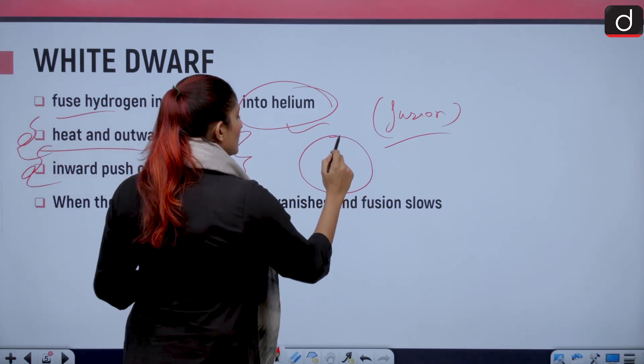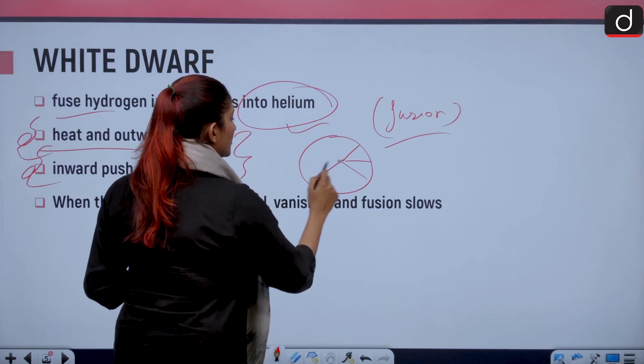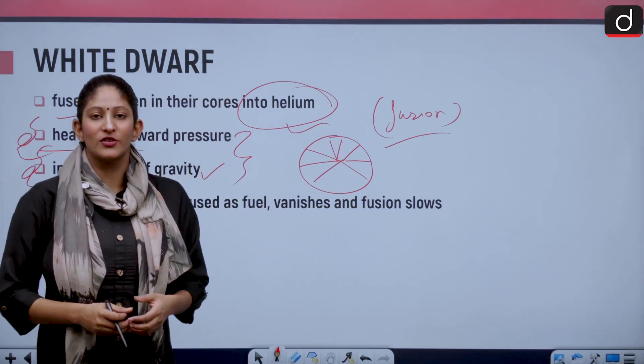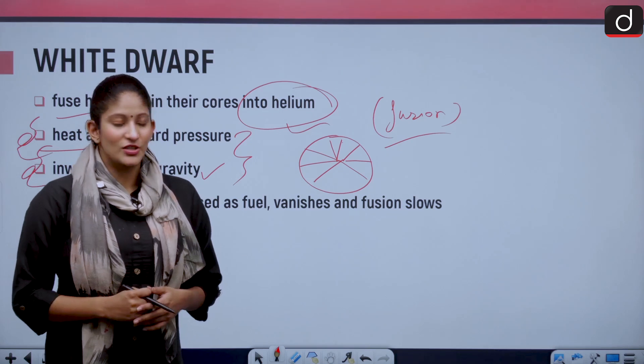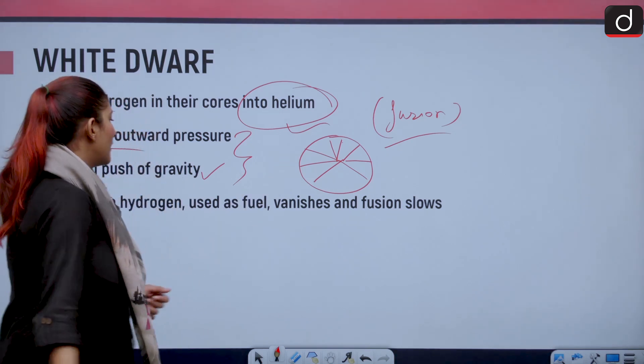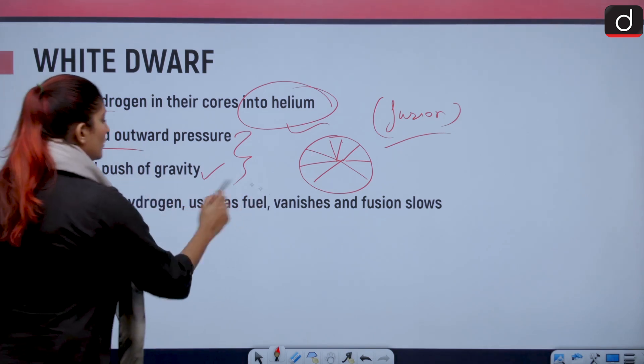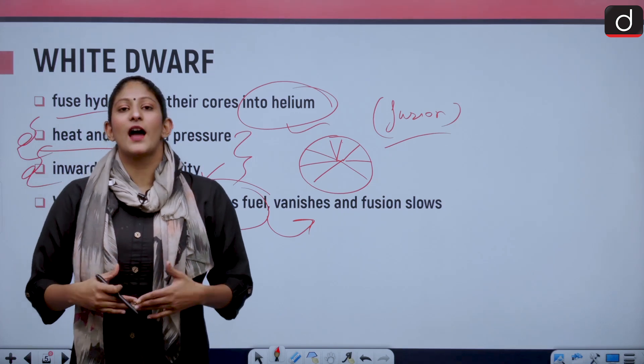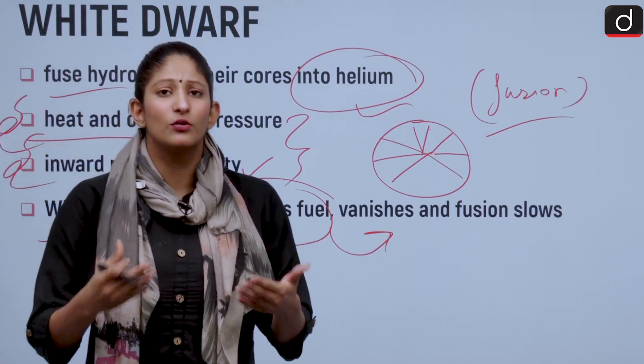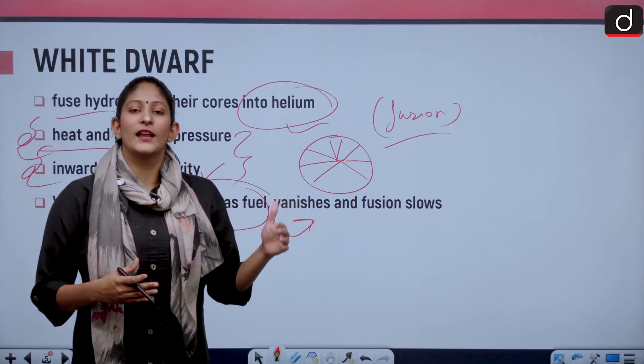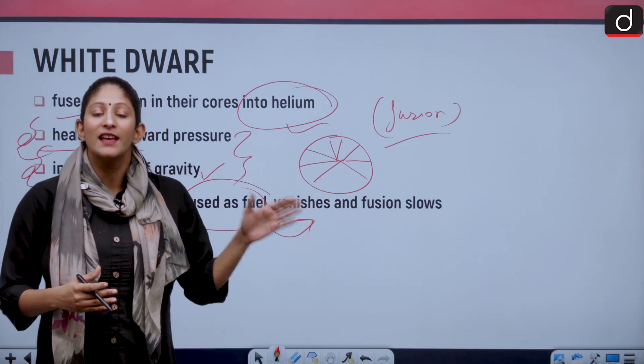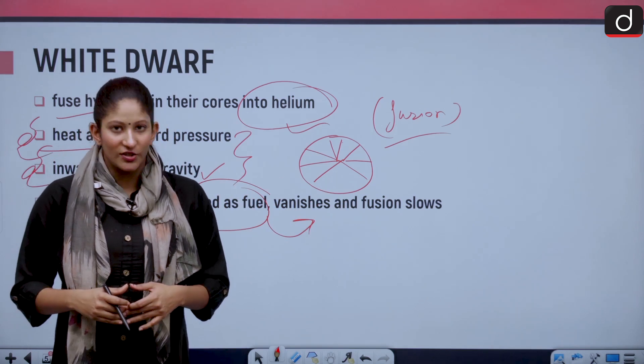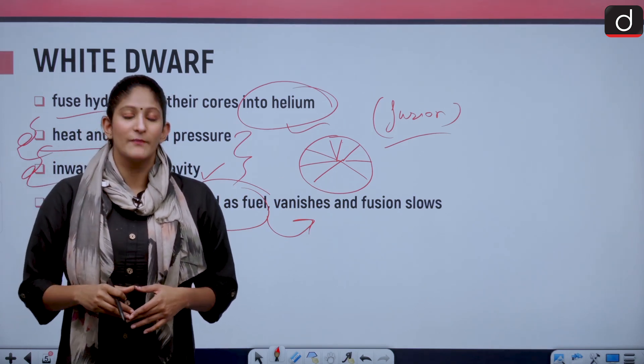Because of nuclear fusion, a lot of heat is generated and outward pressure is also generated. There is also an inward push of gravity for these stars to not expand beyond limits. So because of nuclear fusion and emission of heat and pressure, the star starts to expand, but in order to balance the outward expansion, gravity is such that the star remains intact. When the hydrogen used as fuel vanishes, the fusion slows down. After a period of time, what happens when there is no fuel? The problem with any star which has a lot of mass is that it will eventually collapse into itself. This is known as the Chandrasekhar limit.